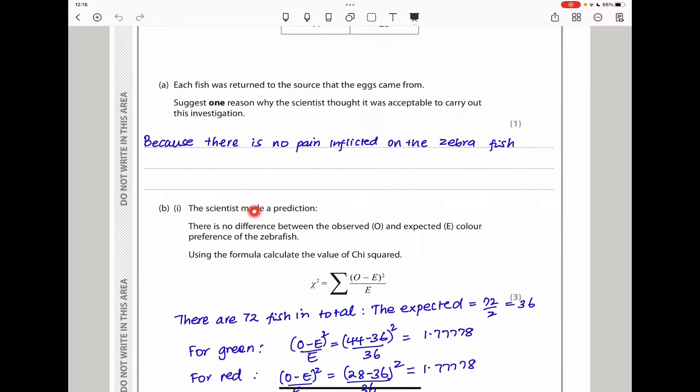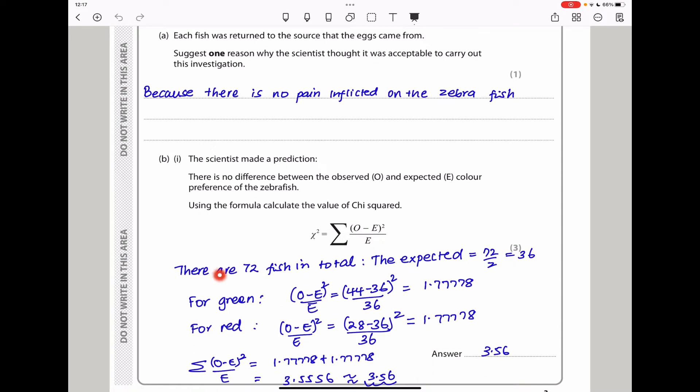The scientist made a prediction: there is no difference between the observed and expected color preference of zebrafish. Using the formula, calculate the value of chi squared. Chi squared is the summation of observed minus expected squared, divided by the expected. There are 72 fish in total, so the expected should be about 36 to go onto each. For green, the observed is 44 minus the expected 36, divided by 36. I squared that numerator and got that value.